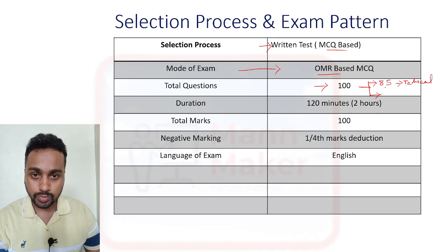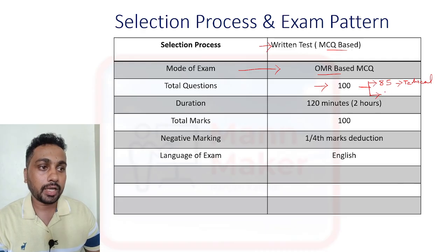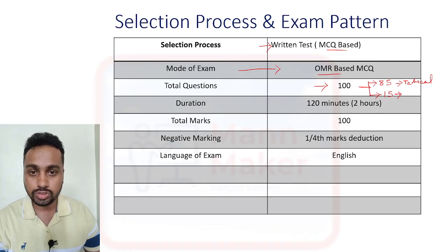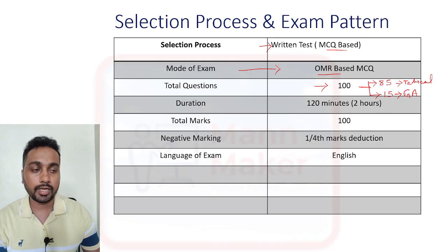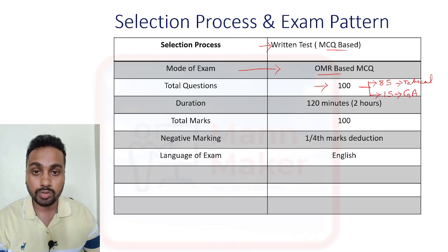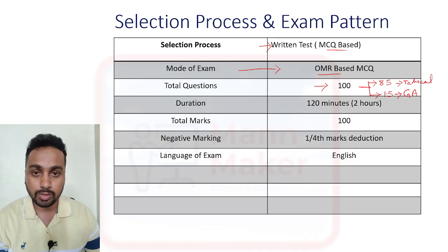Related to software, you will get 85 questions and I will tell you the syllabus for all of those. Apart from that, you are going to get 15 questions that are related to general aptitude. In general aptitude, you will get some questions from aptitude, some reasoning, and some data interpretation — it will be mixed.